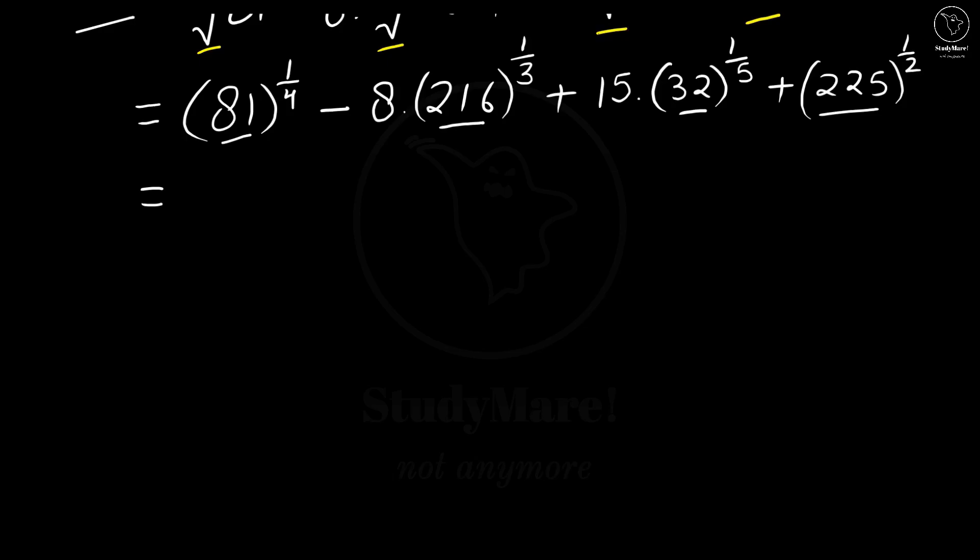The first term is 81. So, 81 if we take the factors: this is 3, 2's are 6 remainder 2, 1, 3 7's are 21. Then we have 3 9's 27, 3 3's are 9. So you see we have 3 to the power 4 which can be written instead of 81. So we get here 3 to the power 4 whole raise to the power 1 by 4 which is already there.